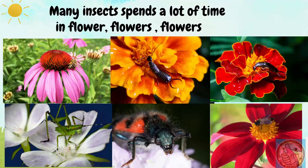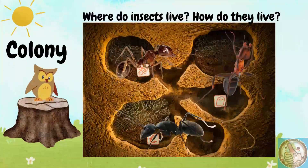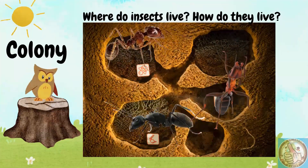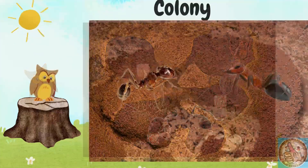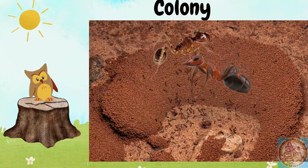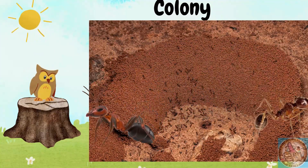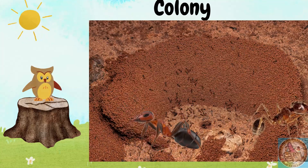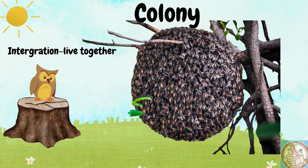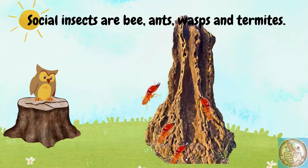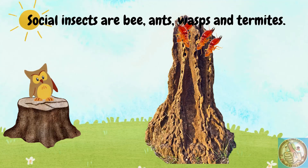Many insects spend a lot of time in flowers. Some insects live in what is called a colony — they live together. Social insects include bees, ants, wasps, and termites.